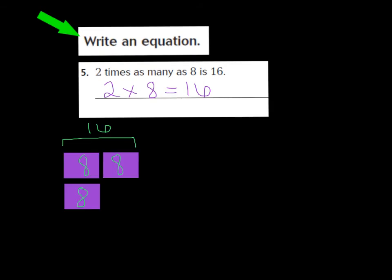Okay boys and girls, let's come back and look at our model. Here's the model that I drew. I'm going to have the rectangle on the bottom representing the eight. I'm going to have this eight two times because it says two times eight is 16. So I'm going to have my eight two times, and these two eights together represent the answer 16 — and that's what my bracket is showing me here. If you didn't get it right, that's fine. Go ahead and fix your model so it looks like mine, and we'll move on.